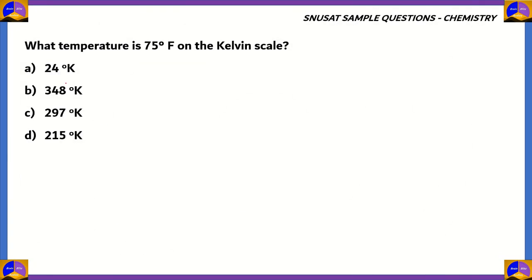Among our options, option C — 297 degrees Kelvin — is the closest to 296.9 K. So 296.9 is close enough to 297. Therefore, the most appropriate option is option C, 297 degrees Kelvin. The other options are incorrect: 348 K would imply greater than 75°F, while 24 K and 215 K would be less than 75°F.